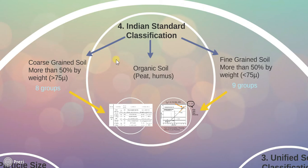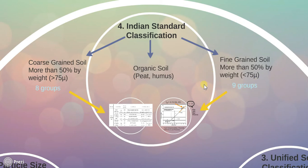The ISCS or Indian Standard Classification System classifies the soil into total 18 groups. In coarse-grained soil there are 8 groups, in organic soil there is 1 group (8+1=9), and in fine-grained soil there are 9 groups, so 9+9=18 groups in total. Now let us understand turn by turn: coarse-grained soil, then fine-grained soil, and organic soil.